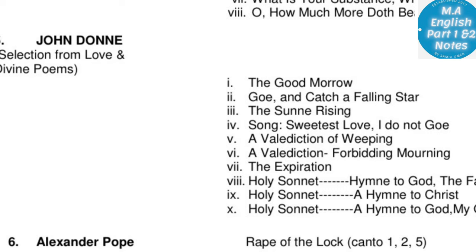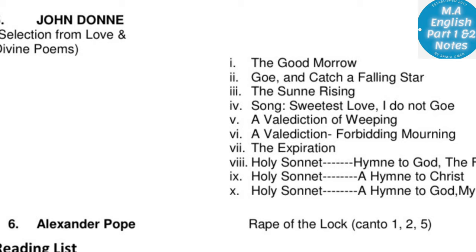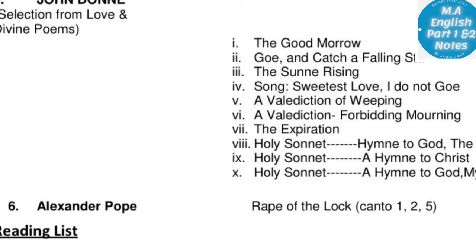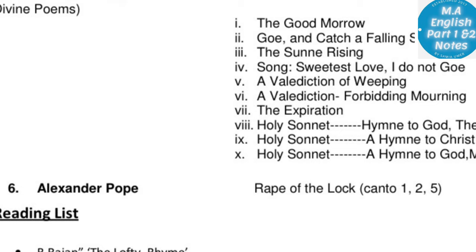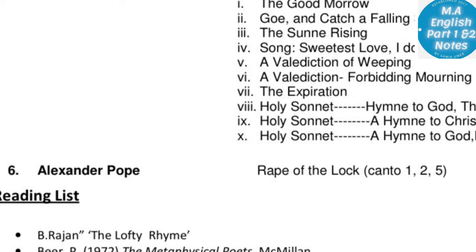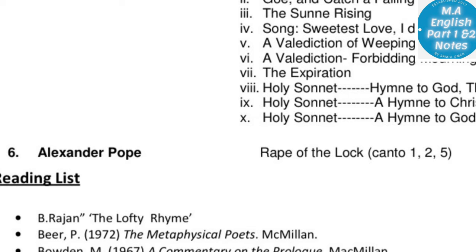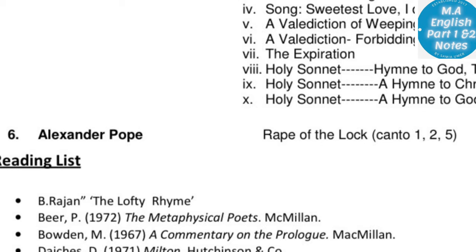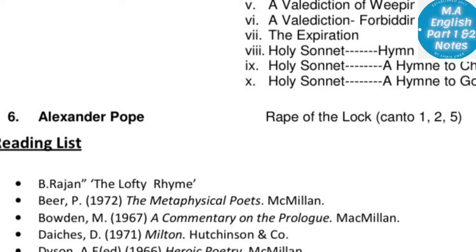From John Donne's love poems: The Good Morrow, Go and Catch a Falling Star, The Sun Rising, Song: Sweetest Love I Do Not Go, A Valediction of Weeping, Valediction Forbidding Mourning, The Expiration. From divine poems: Holy Sonnet, Hymn to God, Hymn to Christ. The last poet is Alexander Pope — Rape of the Lock, Cantos One, Two, and Five are included.